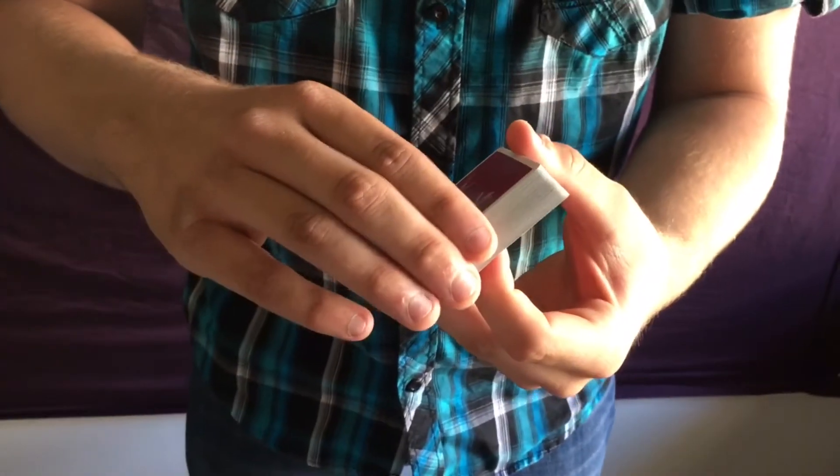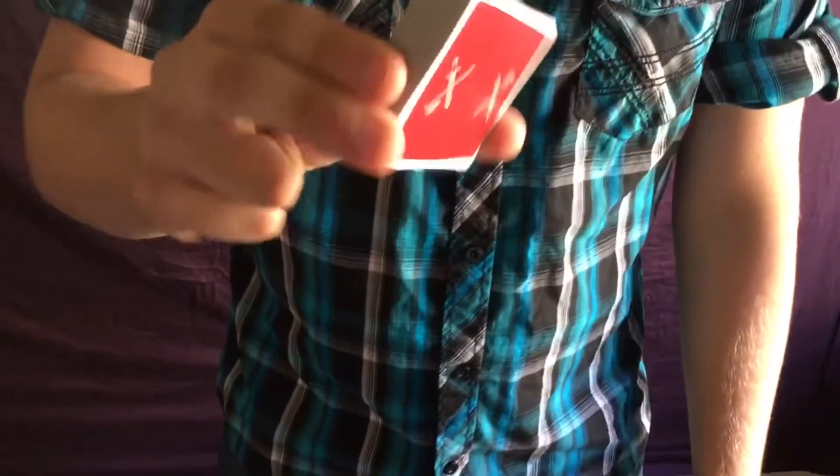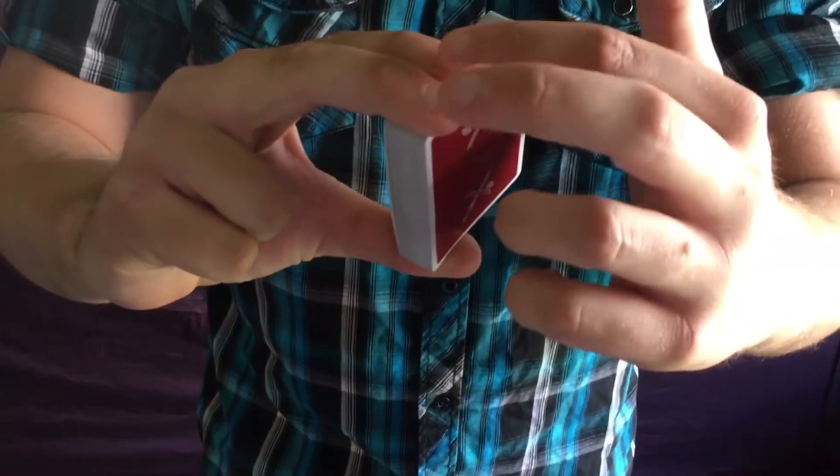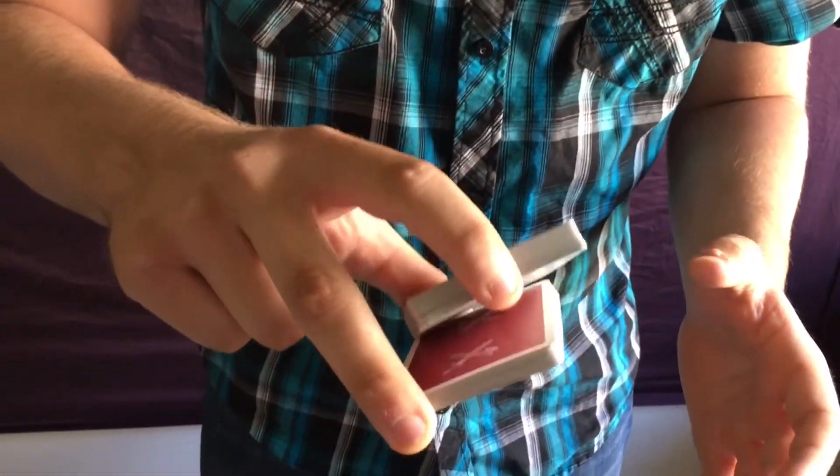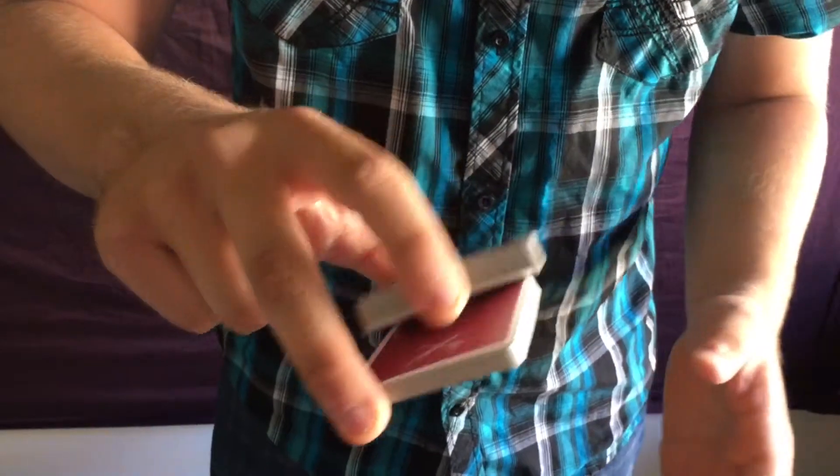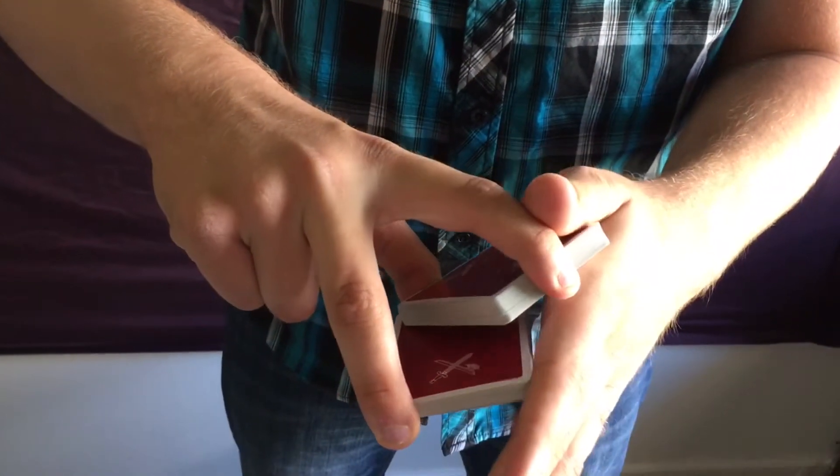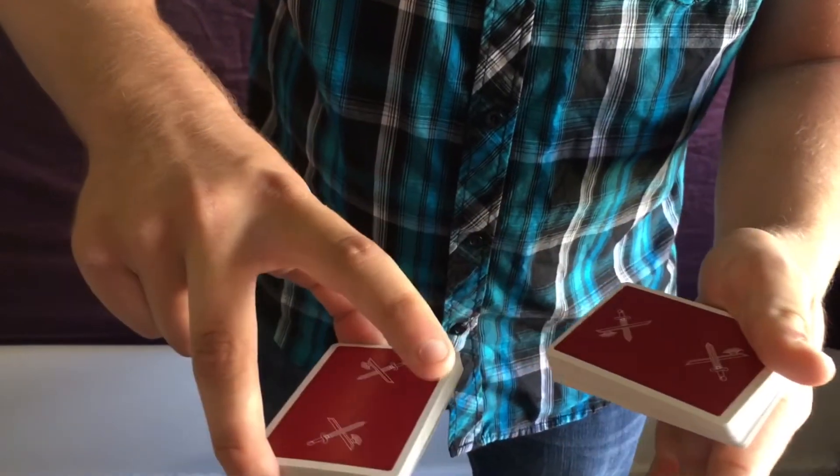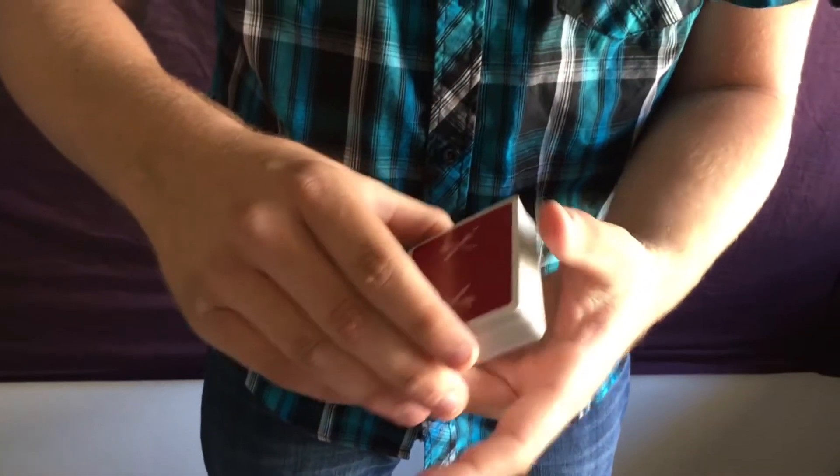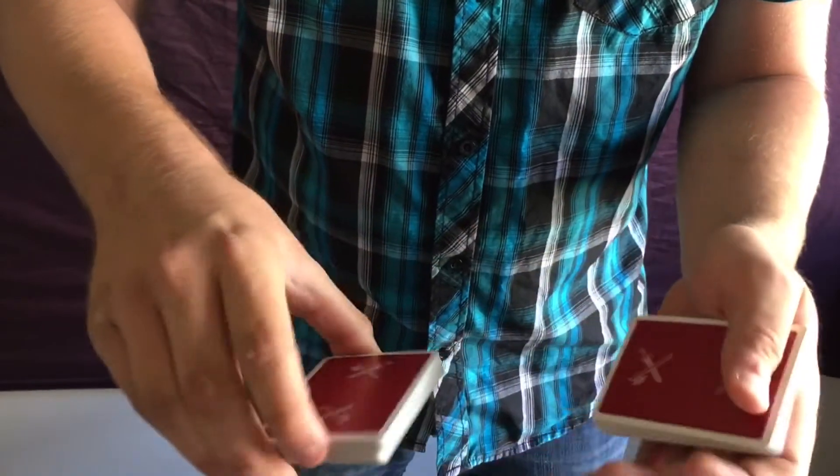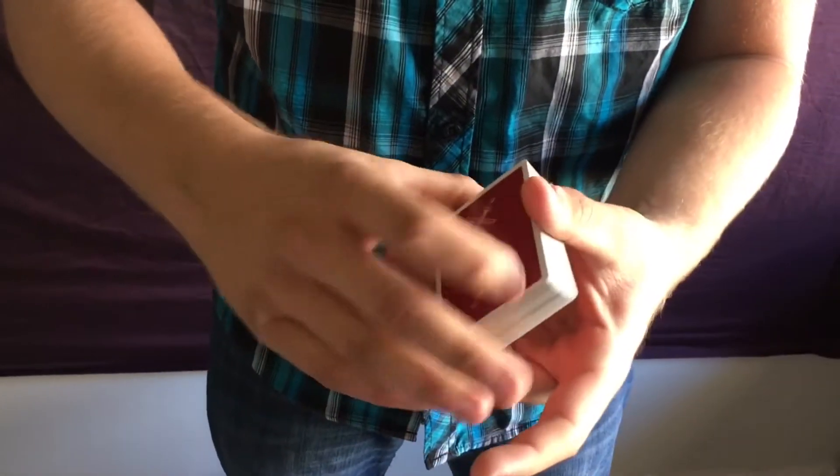When you get your deck of cards, hold it in a biddle grip with your index, middle finger, and thumb. Lift up half the deck with your index finger and swing it over to the meaty part of your hand, then catch it. That's basically the swing cut. You can do it a couple times until you get comfortable with it.